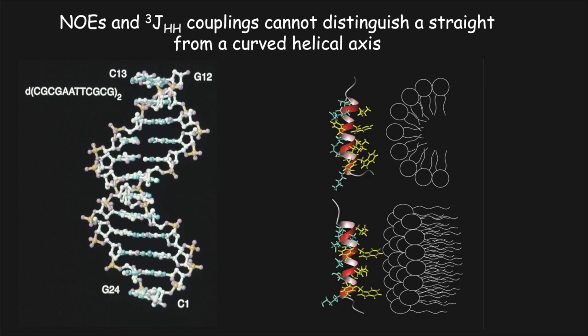What are residual dipolar couplings? When measuring RDCs, we orient the molecules relative to the magnetic field and measure inter-nuclear dipole-dipole couplings between pairs of adjacent nuclei. This allows us to measure the orientation of inter-nuclear bonds relative to the external magnetic field, rather than relative to neighbors. So we can determine the orientation of the bottom base pair and the top base pair both relative to an external magnetic field, avoiding cumulative uncertainties, and thereby determine with very high precision whether the helical axis is straight or curved.